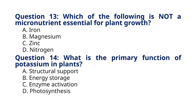Question 14. What is the primary function of potassium in plants? A. Structural support. B. Energy storage. C. Enzyme activation. D. Photosynthesis. The correct answer to question 14 is option C. Enzyme activation.